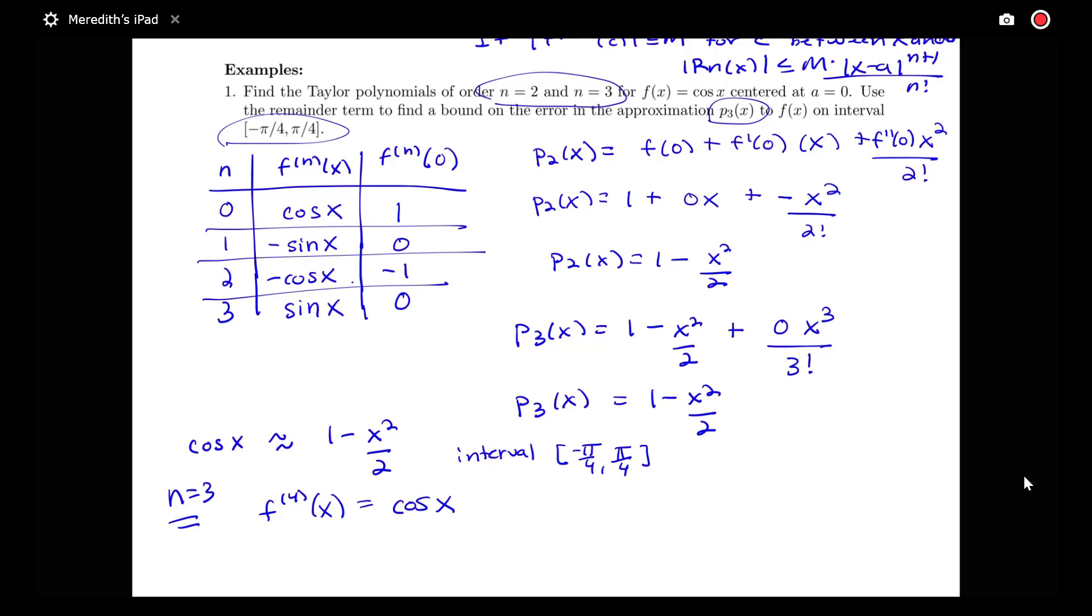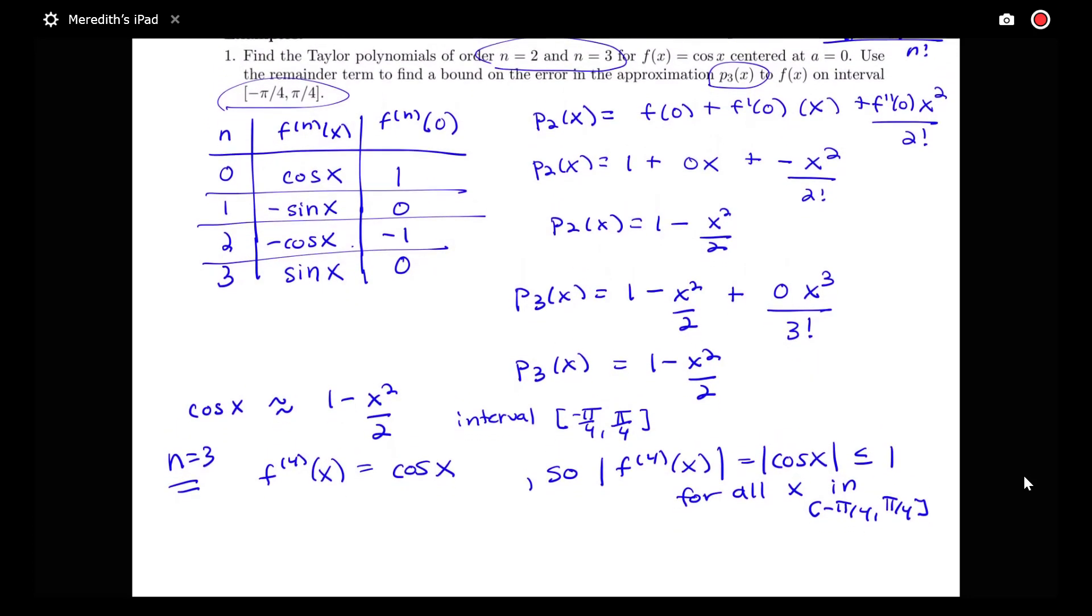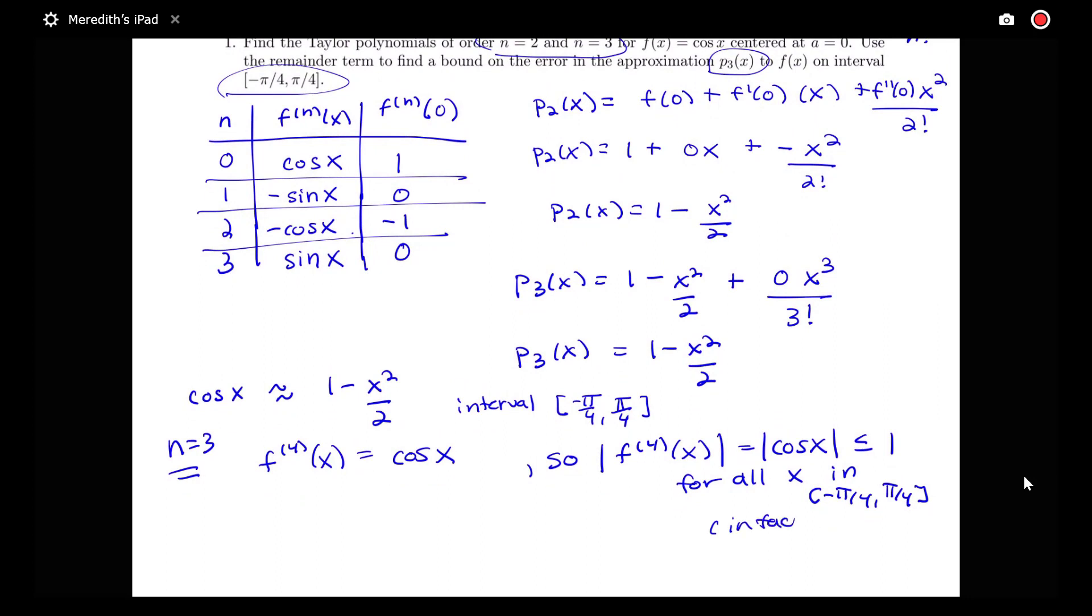So what can I say about a bound on this fourth derivative over that interval? Well, I can say that the absolute value of the fourth derivative, which is equal to the absolute value of cosine x, will definitely be less than or equal to 1 for all x in this interval here, because the absolute value of cosine x is actually always less than or equal to 1. So for all x in that interval, in fact, just for all x in general, we would have that particular bound.